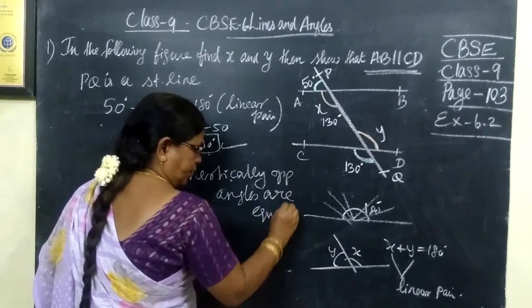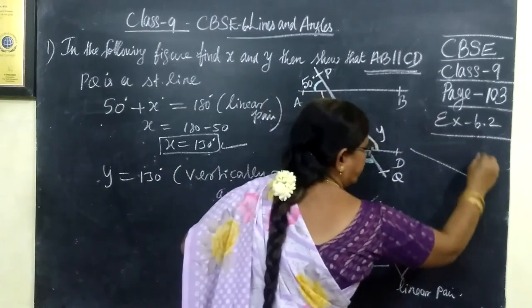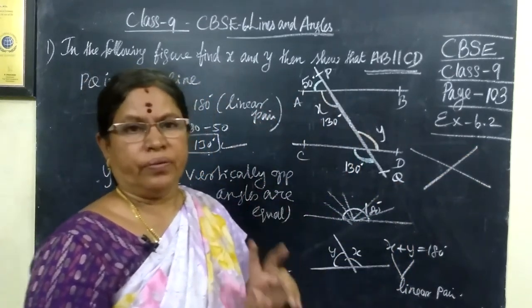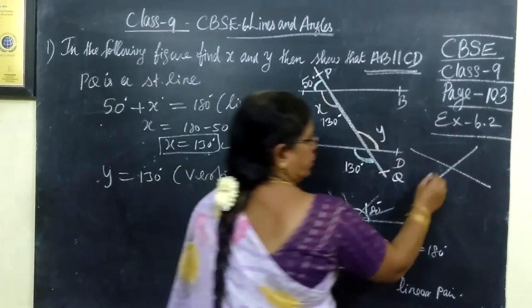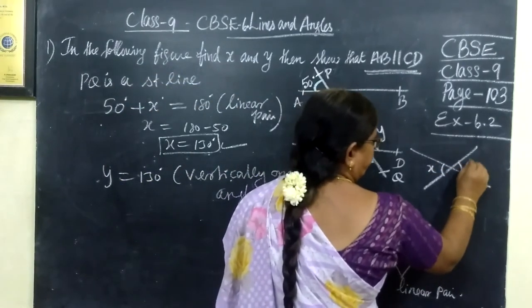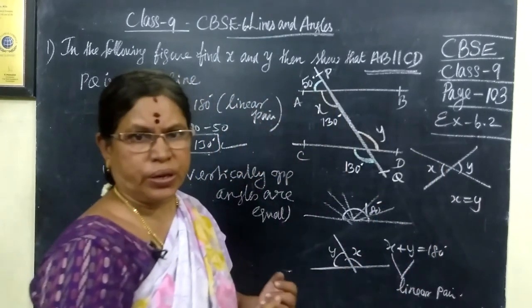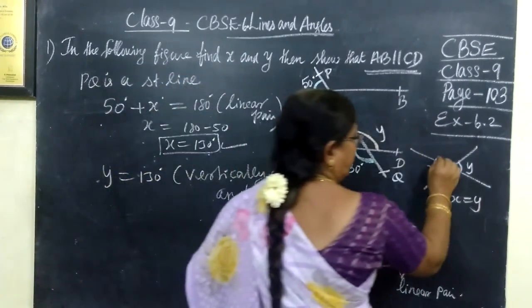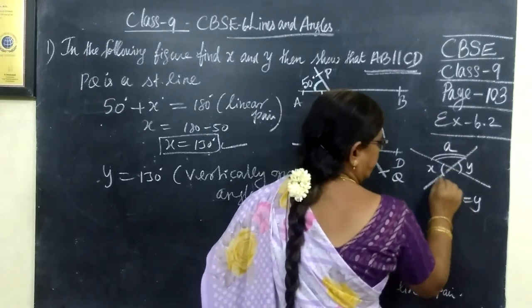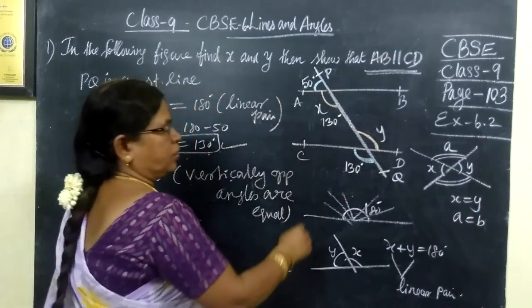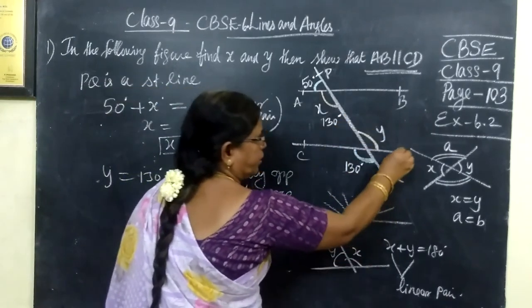If two lines intersect, we get two pairs of vertically opposite angles. Name it as X and Y, X equal to Y since vertically opposite angles, they are equal. And another pair, A equal to B, vertically opposite angles.